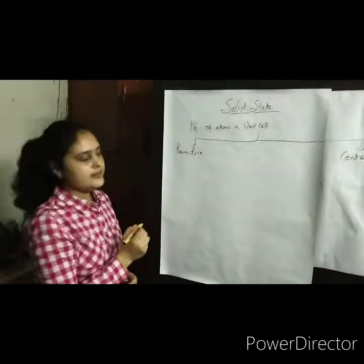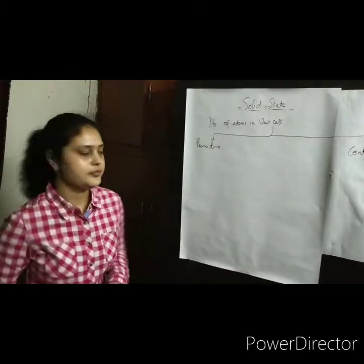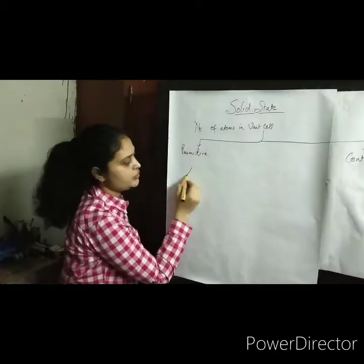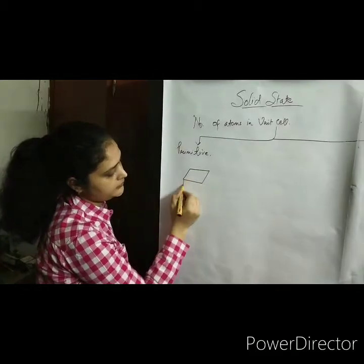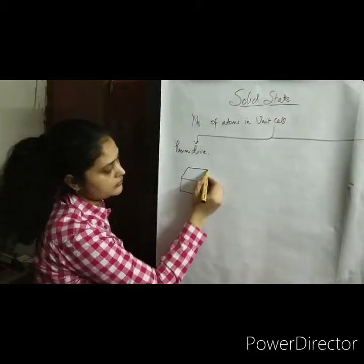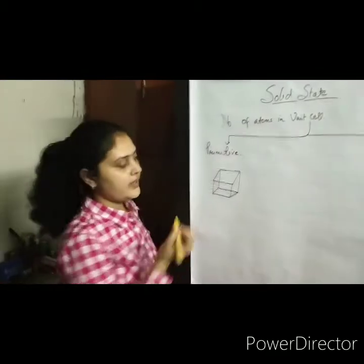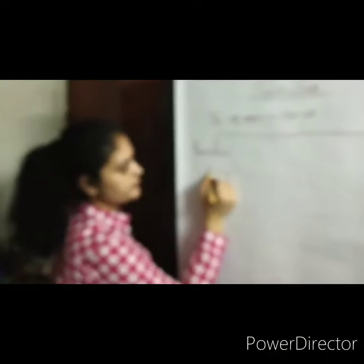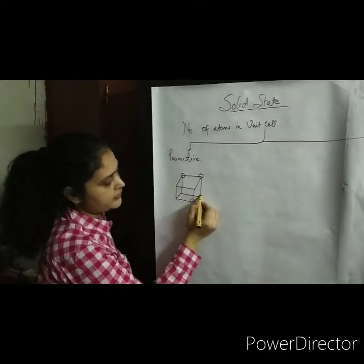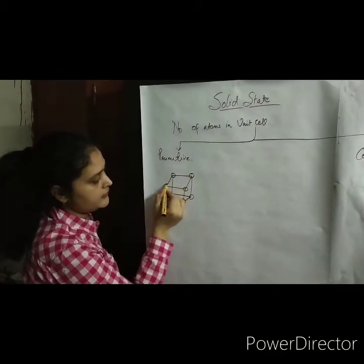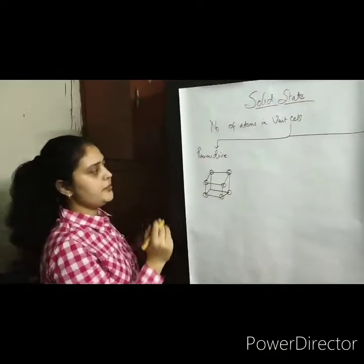In primitive unit cells, the atoms are present at the eight corners of the unit cell. For example, this is a unit cell — it is a cube. There are eight corners and at all corners there are atoms. So this is a primitive unit cell.